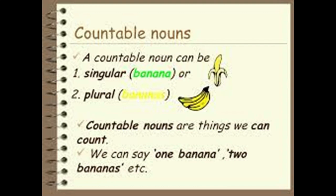So, countable nouns — what are countable nouns? Countable itself is telling you that something which is countable, the thing that you can count. A countable noun can be singular or it can be plural. For example, here you can see on the screen: banana. It is one banana and then there are three bananas. It is countable. Banana is a countable noun. Countable nouns are things we can count. We can say one banana, two banana, etc.